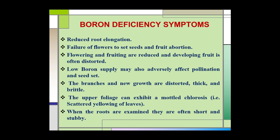The upper foliage can exhibit a mottled chlorosis, meaning scattered yellowing of leaves. When the roots are examined, they are often short and stubby.